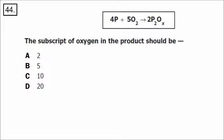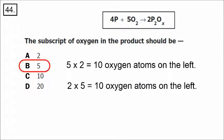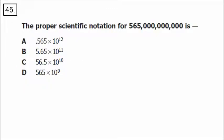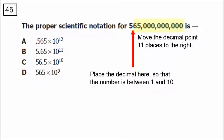Number 44: we have a synthesis equation but we're missing a number on the right. We have 5 times 2, giving 10 oxygens on the left, so we should have 10 oxygens on the right. The X represents a number: 2 times 5 gives 10 oxygens, so X equals 5. The name of that compound would be diphosphorus pentoxide. For number 45, we're putting a number in scientific notation. The first part must fall between 1 and 10, so place the decimal between the 5 and the 6. We have 5.65, and we move the decimal over 11 places to the right. The answer is 5.65 times 10 to the 11.